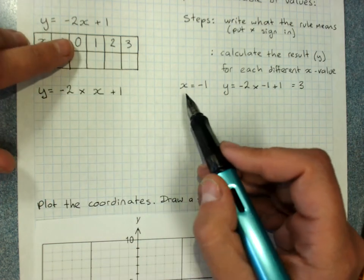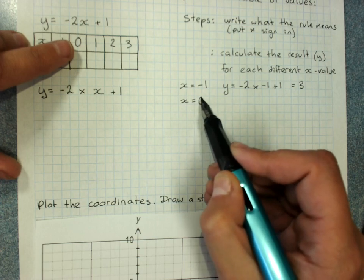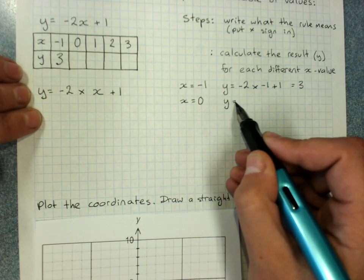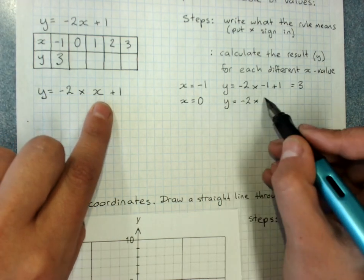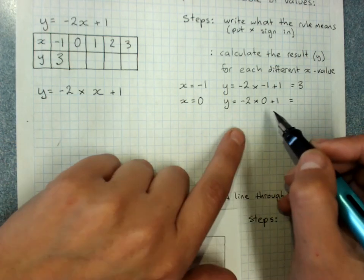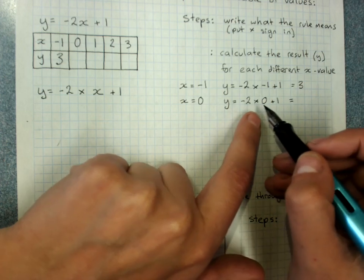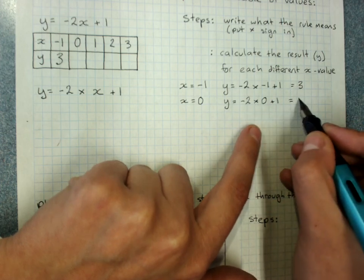Then we do it again when x is 0. And we use our rule, y equals negative 2 times x is 0 now, still plus 1. Now, if we're feeling very clever, we don't need our calculator. Negative 2 times 0, anything times 0 is 0, plus 1 is 1.